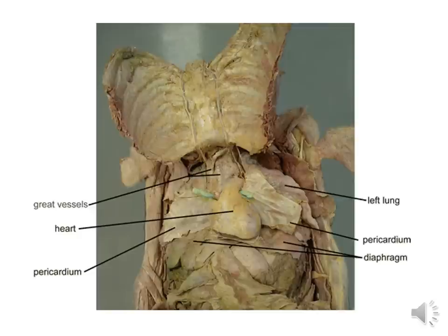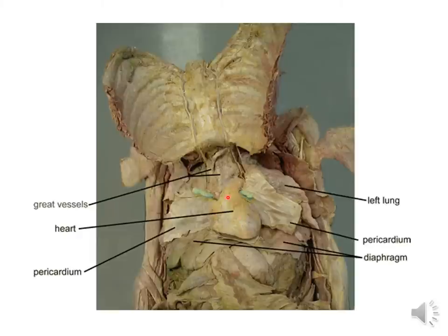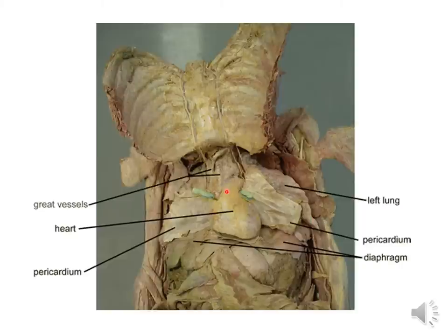Here you can see the gross picture of the heart. There is a cadaver that has been exposed. The ribs have been moved apart to expose the inside of the body, showing the heart in the center of the thoracic cavity. The heart is actually located within a structure called the pericardial sac. Here the pericardium has been removed from the heart to show the inside — that is the heart.